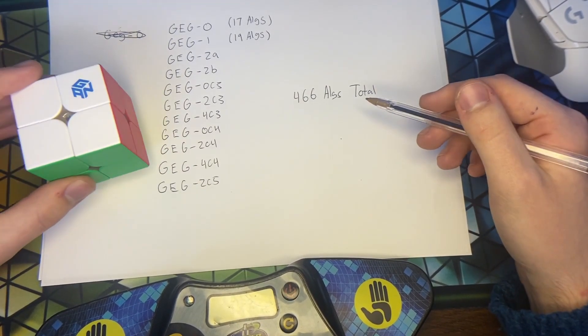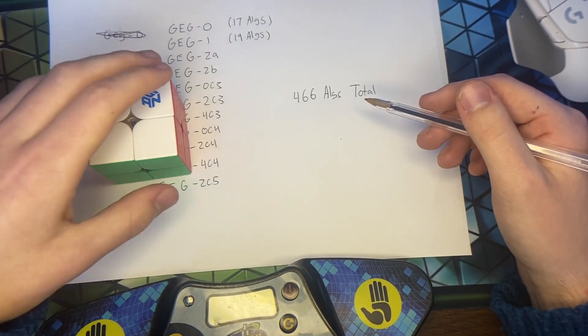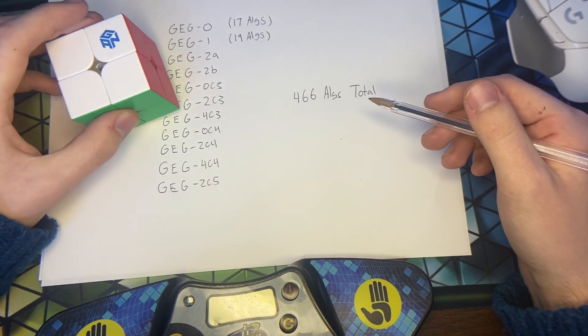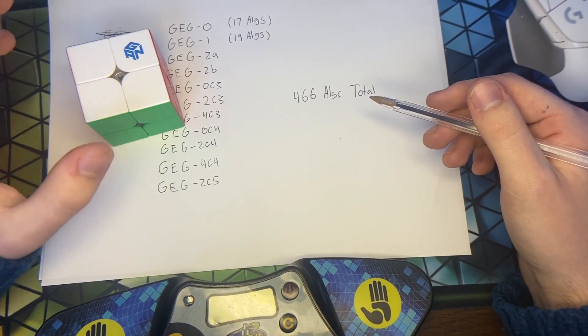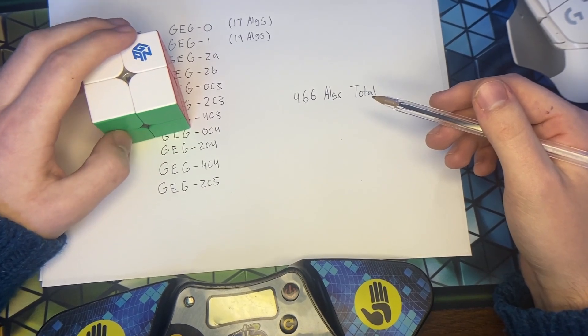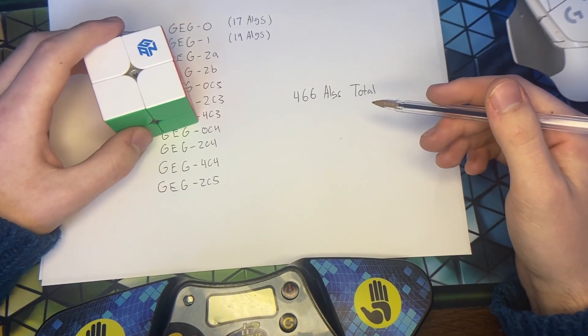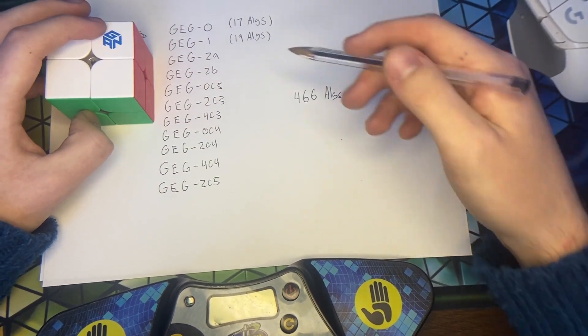I can especially see this being a good method for terrible no-bar scrambles. Where you're struggling to find stuff. With this method you can find a solution that you definitely can just sub 1.5. And just move on with your day and go on to the next solve.